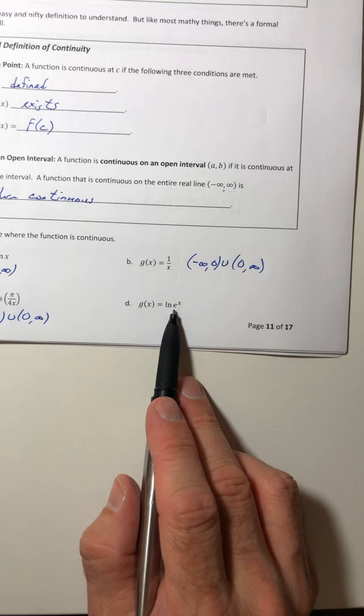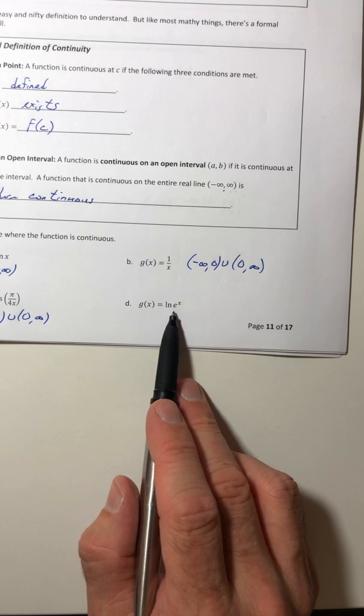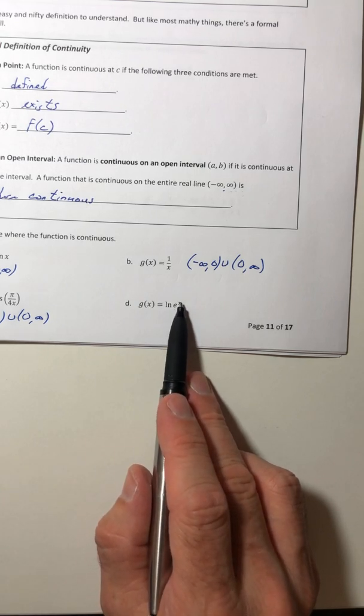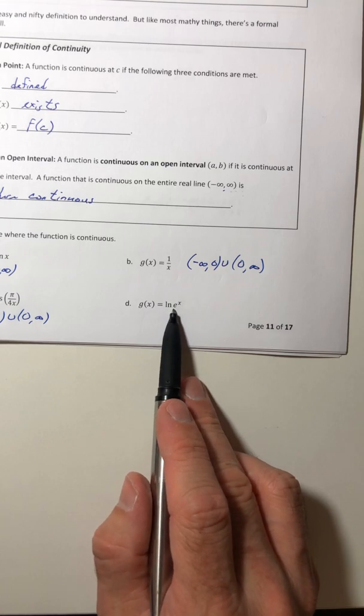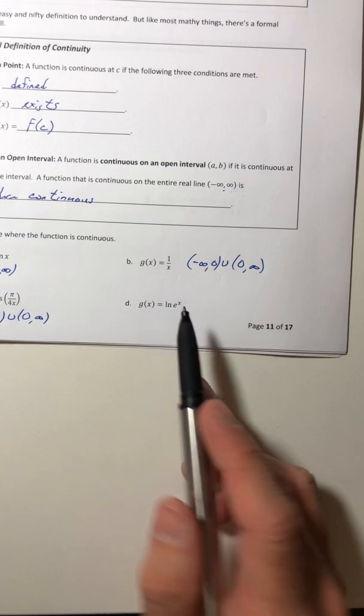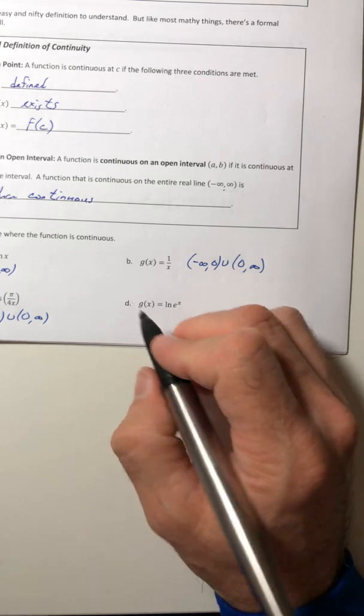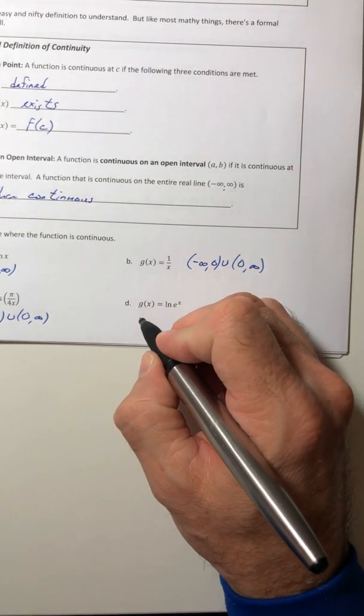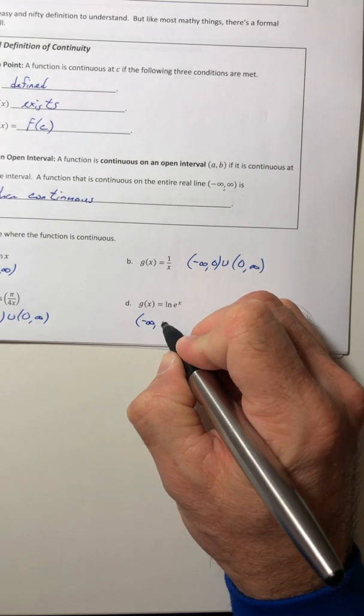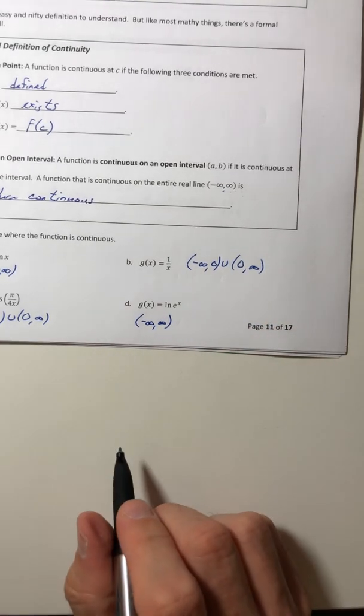Part D, where is that thing continuous? Well, you can plug any number you want into an exponent. So e to anything is always going to give you a result. So it's continuous on the entire real line.